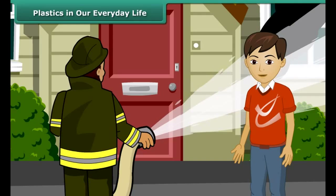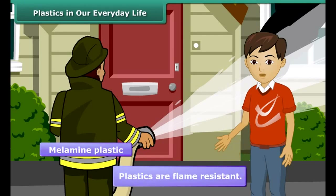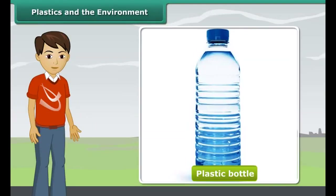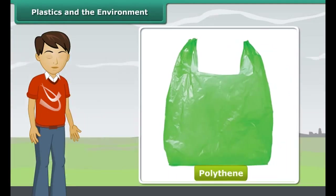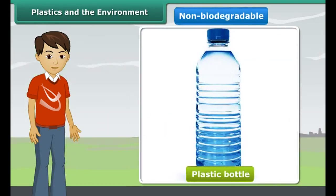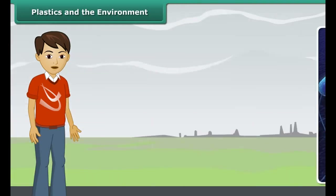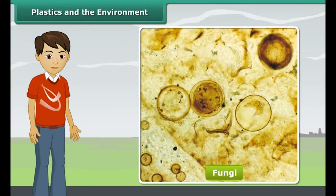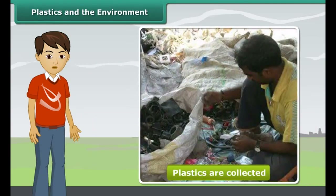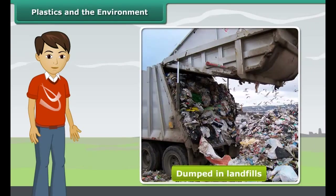Have you ever noticed the frying pan for cooking dosa? You would have seen a black coating on it — it is teflon, which is a special plastic on which oil and water do not stick, making it useful as a non-stick coating on cookware. There are also fireproof plastics: the uniforms of firemen have a coating of melamine plastic to make them flame resistant. Can we imagine a life without plastic? No, we surely cannot, because it is an alternate resource in the times of our dwindling natural resources.